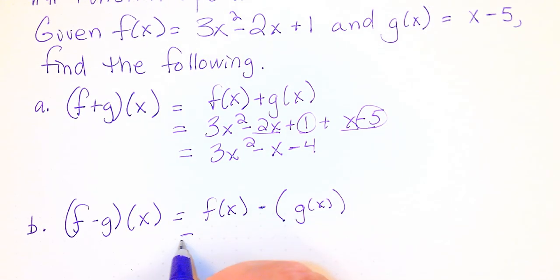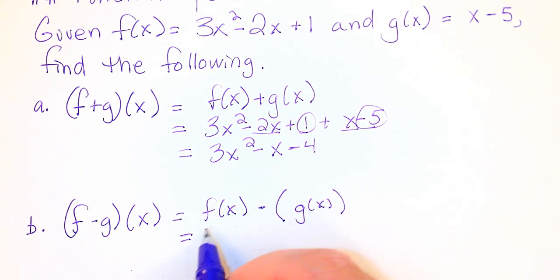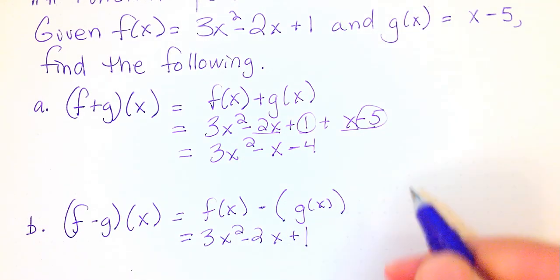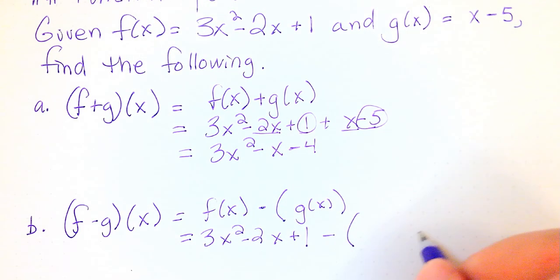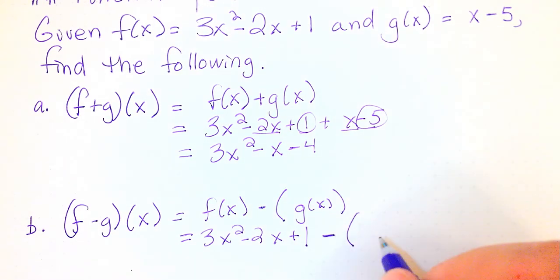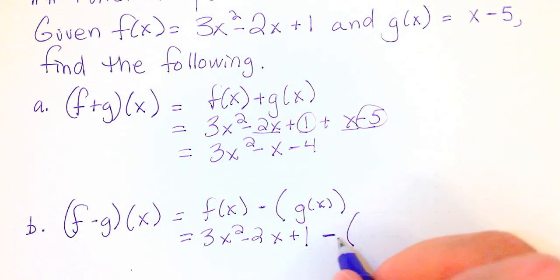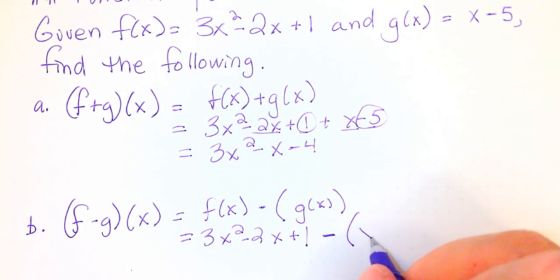So now let's substitute in. f(x) is 3x² - 2x + 1 minus parentheses g(x). And this is really important because this minus is going to go for each term in g(x). So I'm going to do minus parentheses (x - 5).